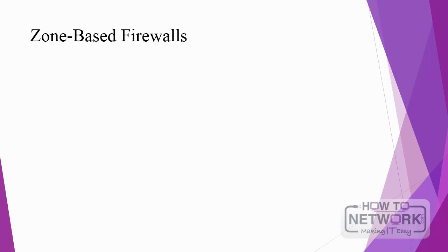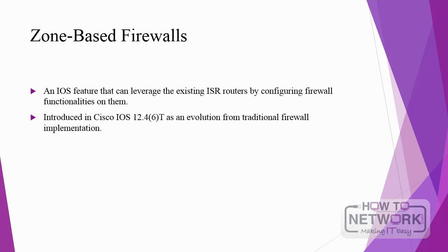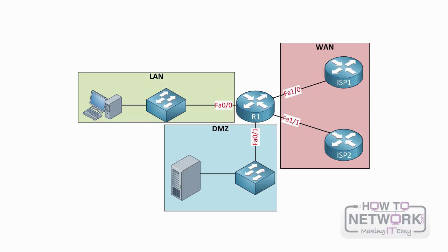Next, let's talk about zone-based firewalls. A zone-based firewall policy is an IOS feature that can leverage the existing ISR routers by configuring firewall functionalities on them, as opposed to using dedicated ASA devices or firewall modules. Cisco's zone-based firewall functionality was introduced in Cisco IOS version 12.4.6 as an evolution from traditional firewall implementation, which was an interface-based model. The limitations imposed by the traditional firewall implementation led to the development of zone-based firewalls.